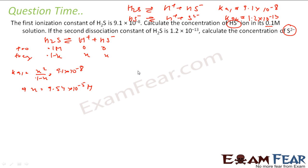So the concentration of HS⁻ is 9.54 × 10⁻⁵ M.